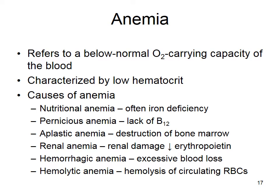Aplastic anemia is where you get destruction of the bone marrow — you can't make red blood cells if your bone marrow is destroyed, which could be due to radiation exposure. Renal anemia is where you have kidney issues; people go into kidney failure, stop producing EPO, and become anemic. Hemorrhagic anemia is excessive blood loss, like after childbearing. Hemolytic anemia is where you get hemolysis of circulating red blood cells, which is often toxin-induced.